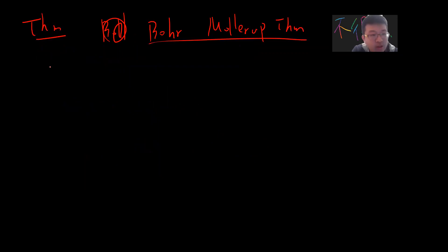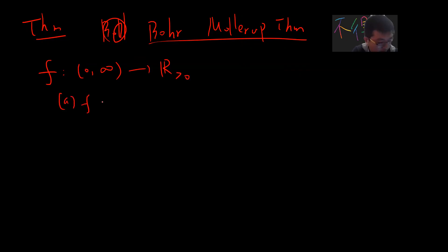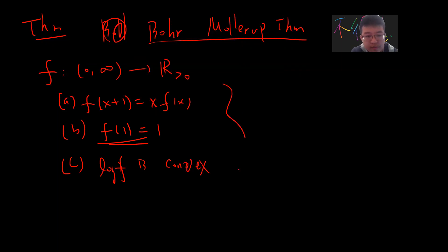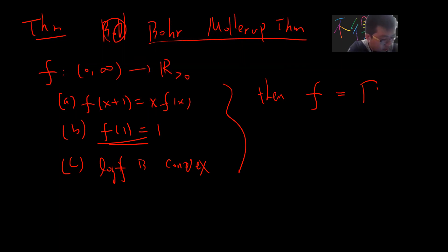So, theorem — this is the only non-trivial thing I want to prove in this video. The Bohr-Mollerup theorem says: suppose f is a positive function defined on (0, ∞) such that (a) f(x+1) = x·f(x), (b) f(1) = 1 — you can view this as a boundary condition — and (c) log f is convex. Then f must be the gamma function.